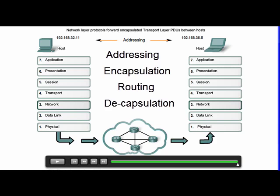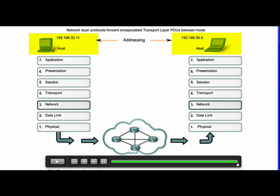First, the network layer must provide a mechanism for addressing these end devices. If data are to be directed to an end device, that device must have a unique address.